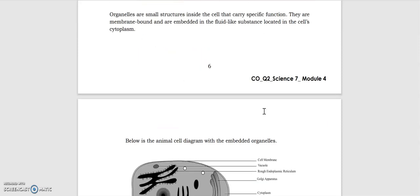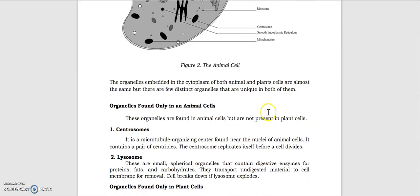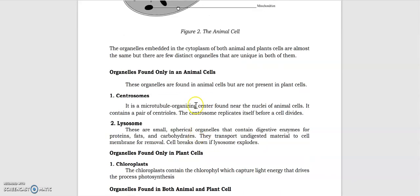Let's start with organelles found in animal cells. Centrosomes: it contains a pair of centrioles. These centrioles replicate itself before a cell divides.